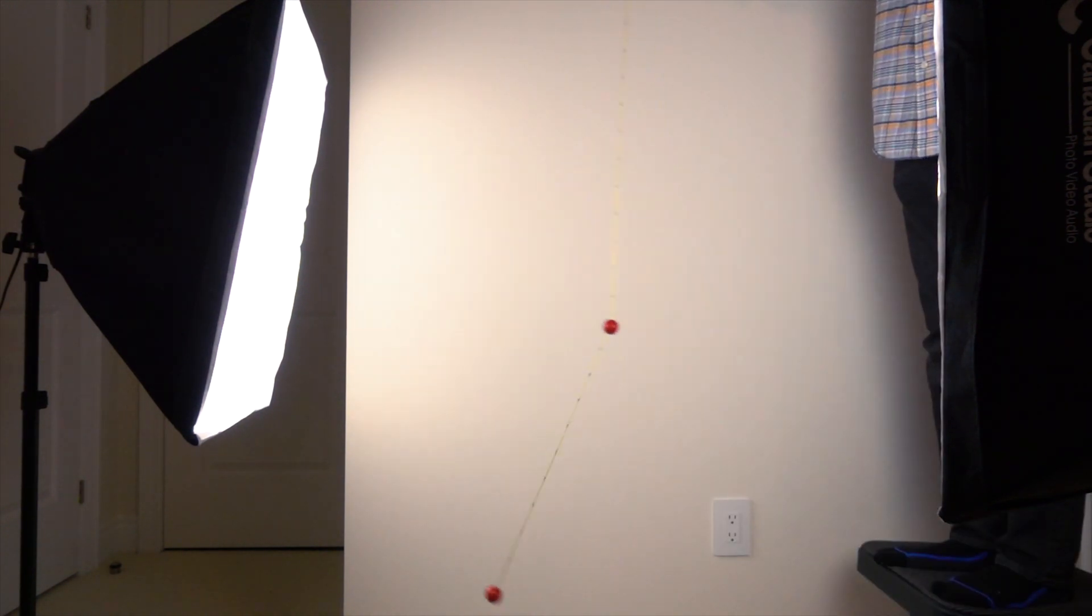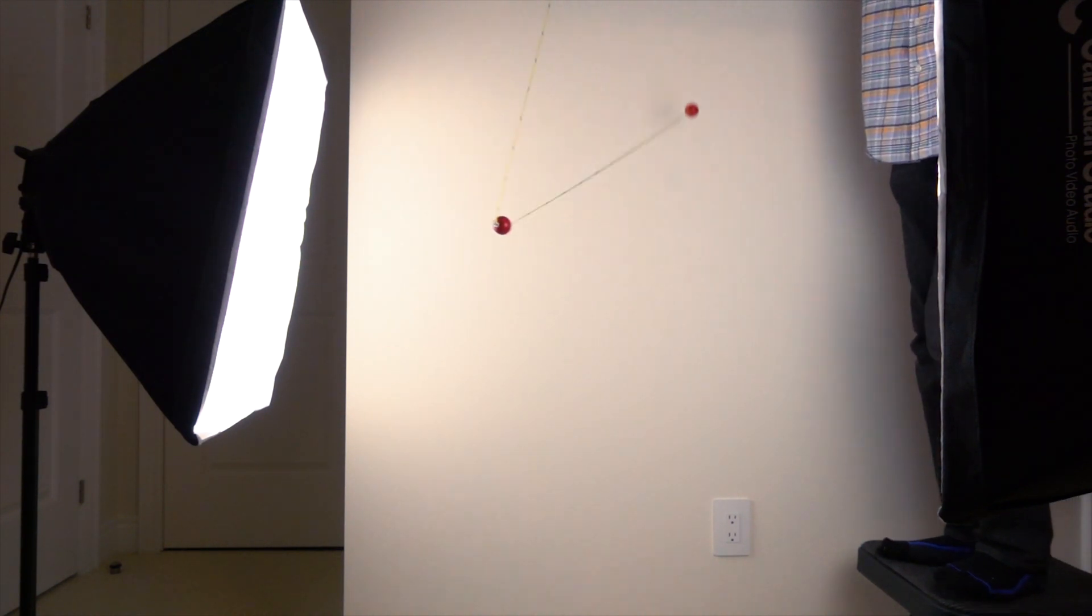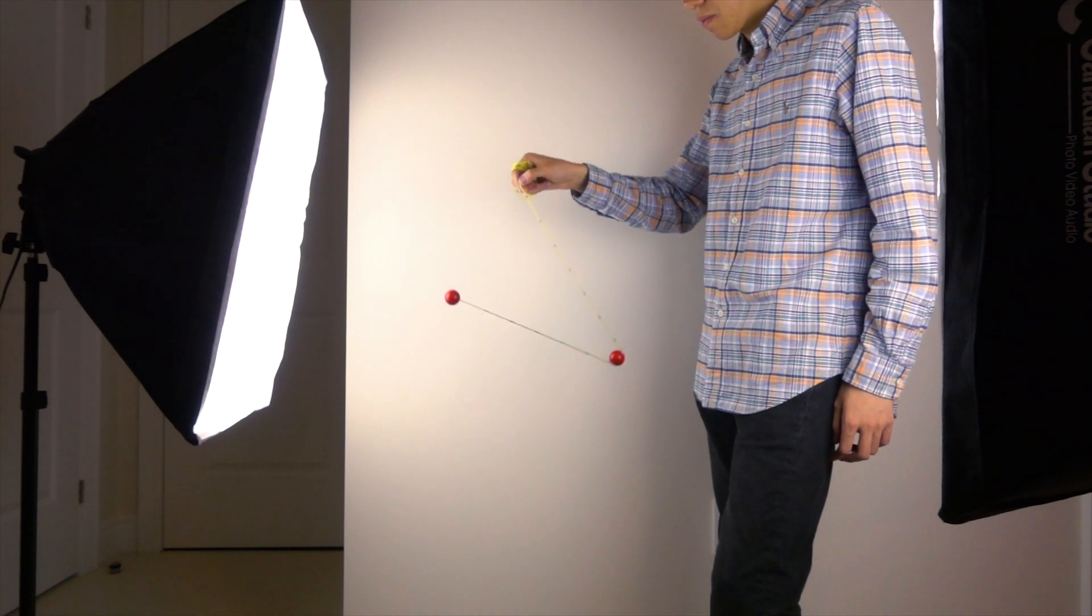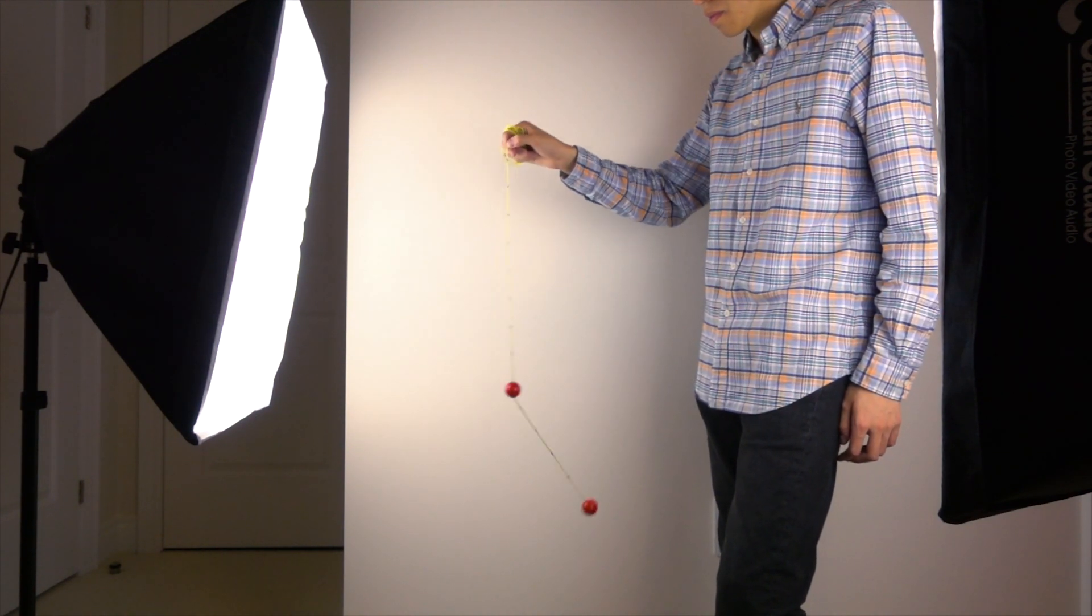When we change the amount of energy in the system, we can observe large and small orbits. Clearly, large orbits have a longer period compared to smaller orbits.